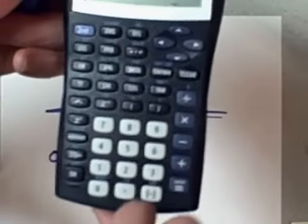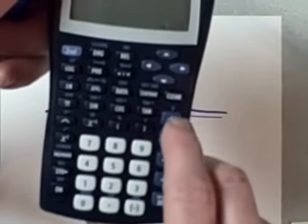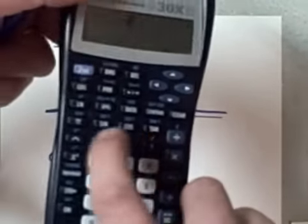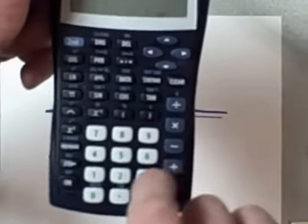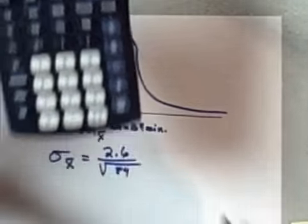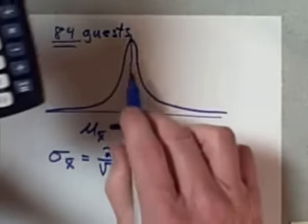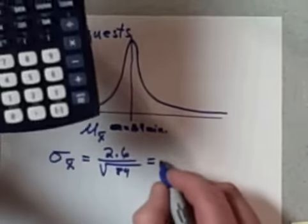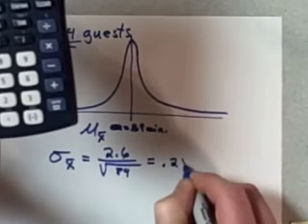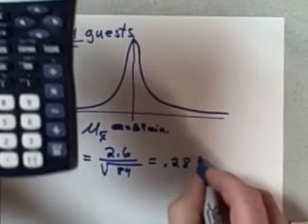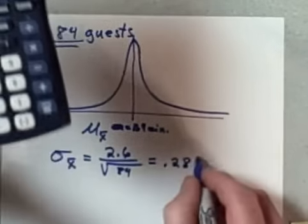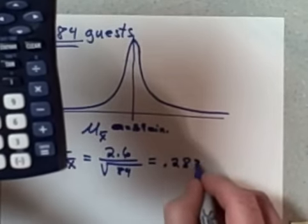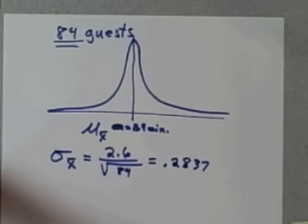Well, if I do it in my calculator, I put in 2.6 divided by the square root sign 84, close parentheses, equals—and that tells me that my new standard deviation for this distribution of the means of all the samples is 0.28. Let's call that 0.2837.